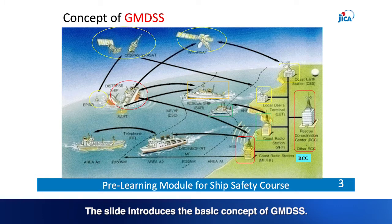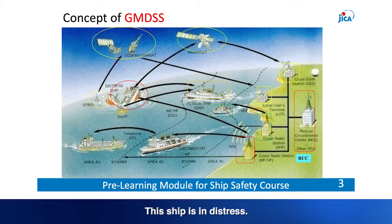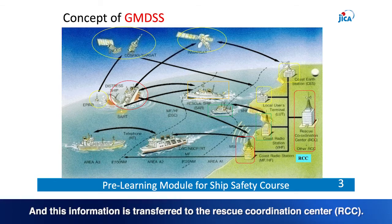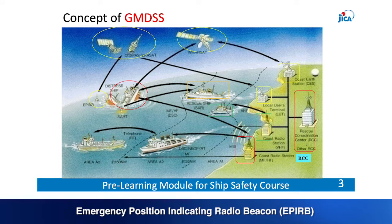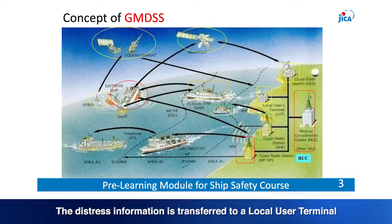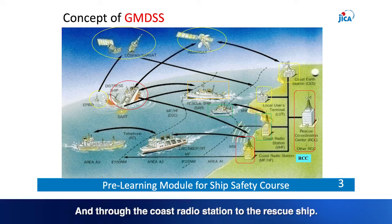The slide introduces the basic concept of GMDSS. For search and rescue operation of ship-to-shore-based stations: a ship in distress transmits a distress alert by MF/HF/DSC or VHF/DSC to the coast radio station. This information is transferred to the Rescue Coordination Centre (RCC) and through the coast radio station to the rescue ship. At the same time, a distress alert is also transmitted by Emergency Position Indicating Radio Beacon (EPIRB) or InMarSat-SES satellite systems. The distress information is transferred to a local user terminal or Coast Earth Station through RCC and to the rescue ship.